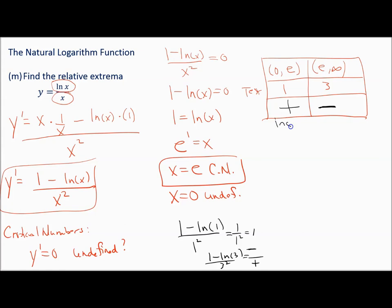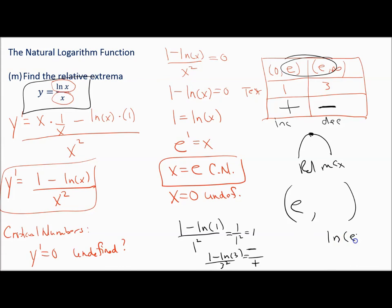We're increasing then decreasing, so we have a relative maximum. The x value is e. What's the y value? Plug e into the original function: natural log of e over e. Natural log of e by definition is 1, so the relative maximum is 1 over e.